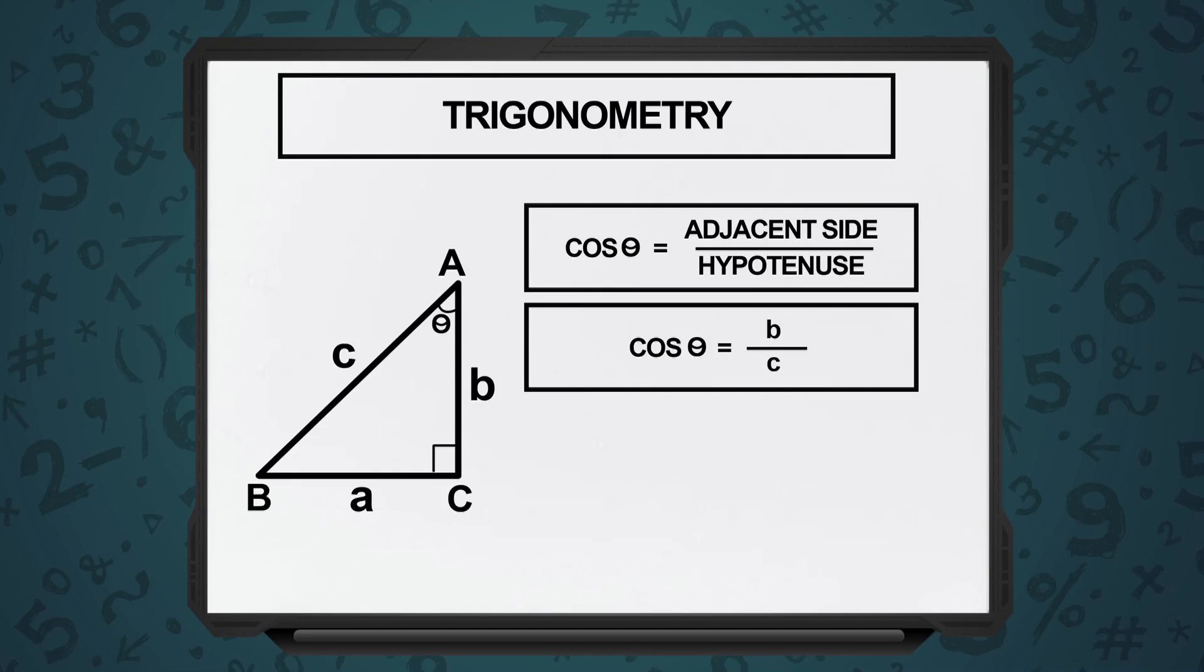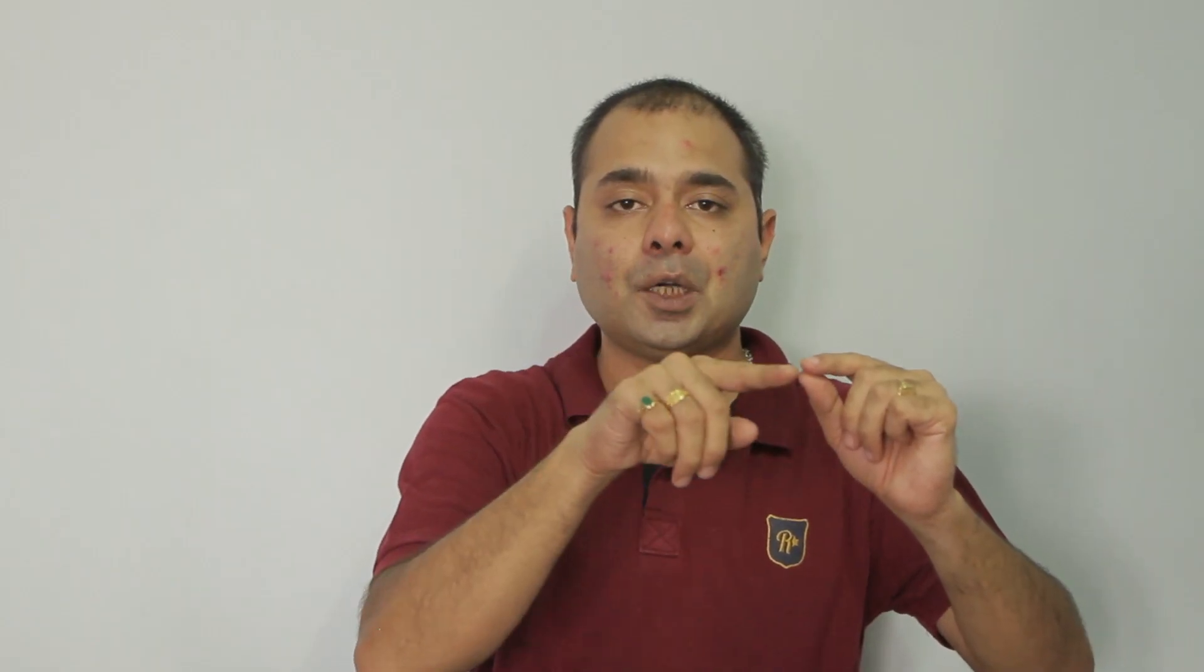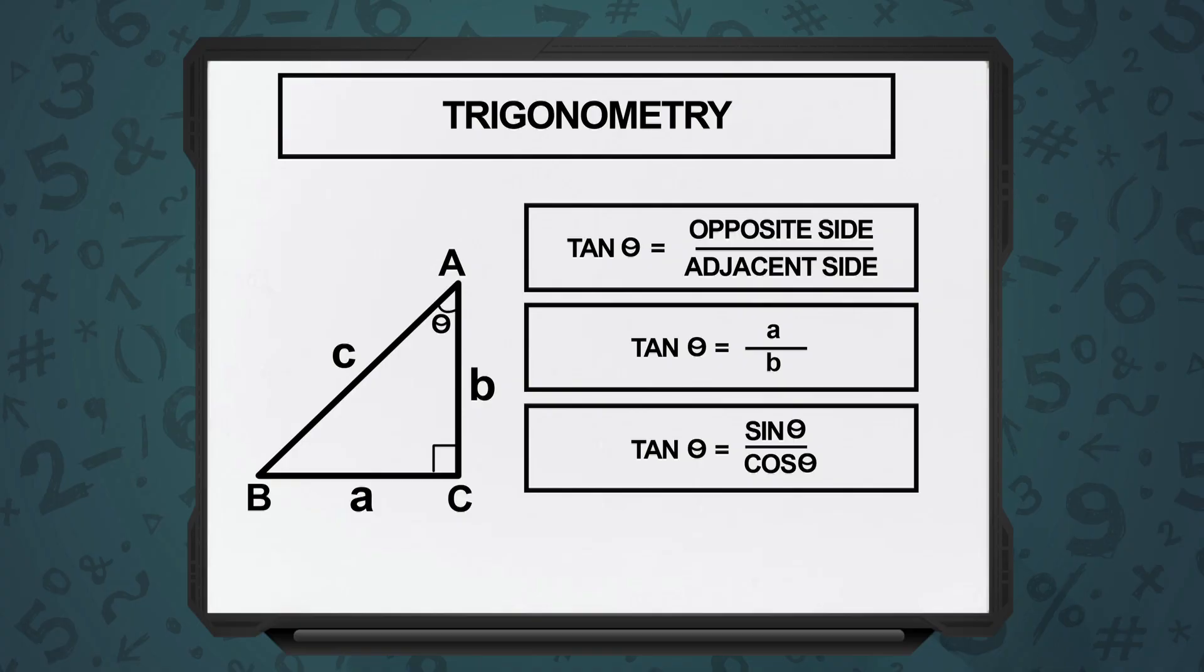Cos theta is adjacent side divided by hypotenuse, so you can say cos theta is equal to B upon C. And tan theta is opposite side upon adjacent side, so it becomes A upon B.